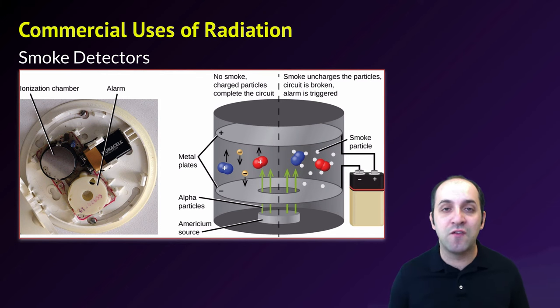But when there's smoke in the environment, the smoke moves into that ionization chamber and prevents the alpha particles from continuing to produce ions, which breaks the circuit and signifies that there's smoke in the environment, which triggers the smoke alarm. The amount of radioactive material in your smoke detector is incredibly small and it's so well shielded that you cannot detect any additional radioactivity around the smoke detector if you use something like a Geiger counter.